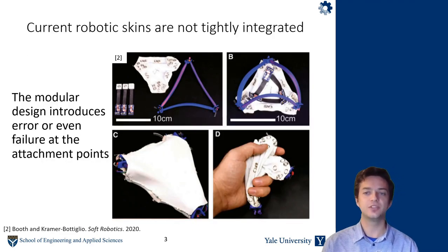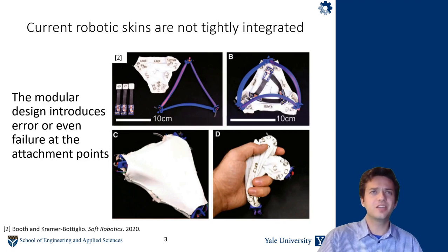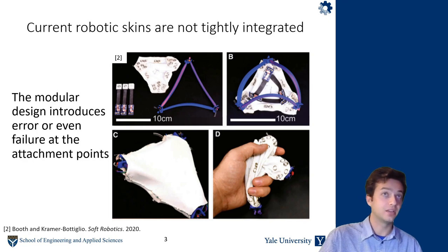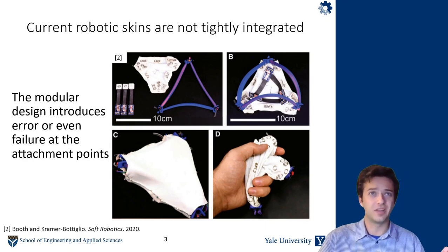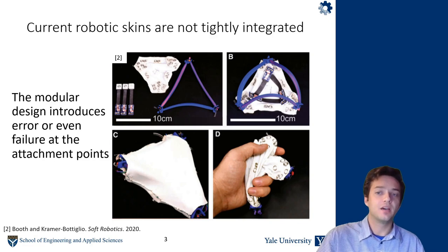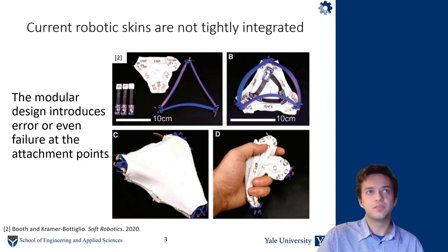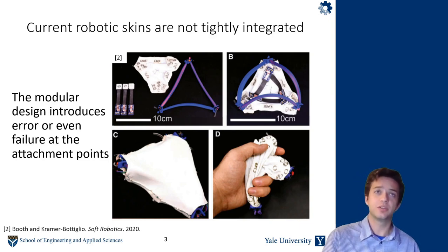A current limitation with robotic skins is that they're not tightly integrated, so they're quite bulky. Actuators and sensors are attached to a soft substrate via these snaps here, and so this introduces failure at the connection points or errors, and it really makes the skins very far from their biological inspiration.